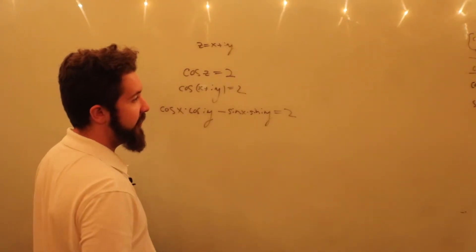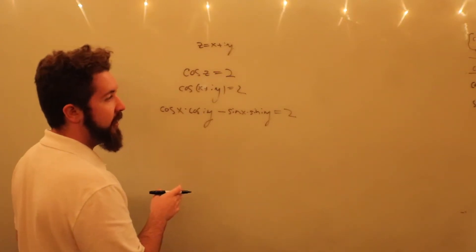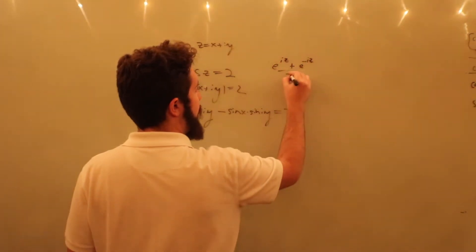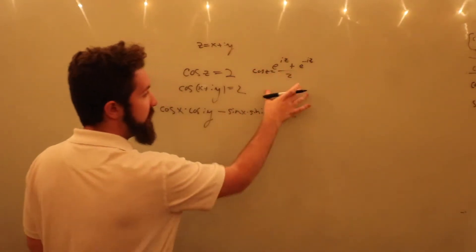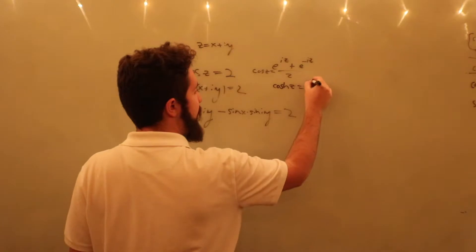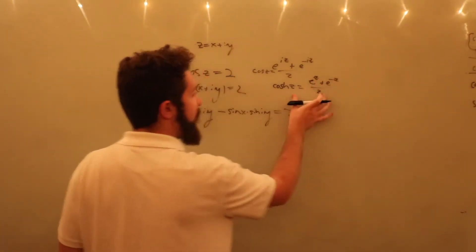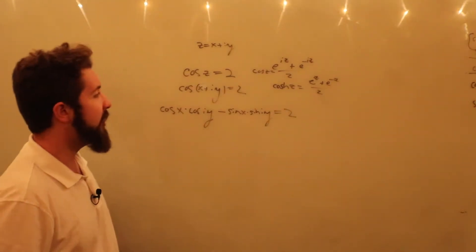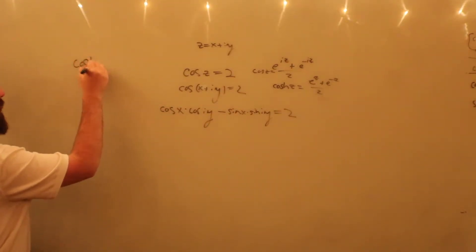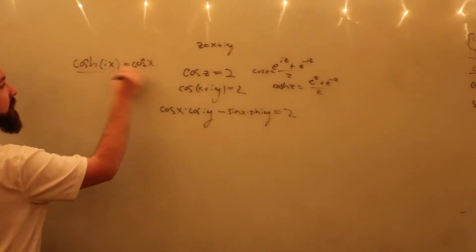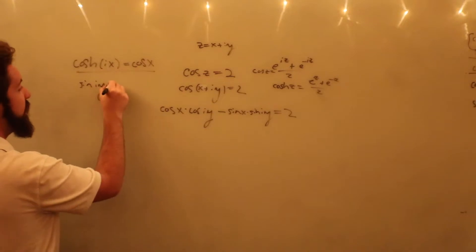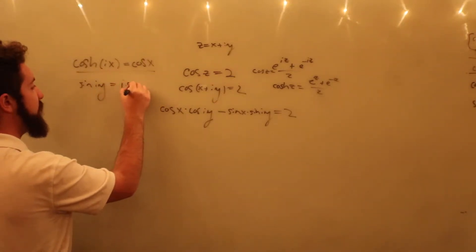Now we're going to use some more lovely identities. Because of the definition of sine and cosine in terms of these exponentials, e to the iz plus e to the negative iz divided by 2 is cosine. Notice the similarity between this and the hyperbolic cosine: cosh(z) is equal to e to the z plus e to the negative z over 2 — that's how we define it, even for real numbers. This gives way to the identity: cosh(ix) = cosine(x). Likewise, the second identity says sine(iy) = i·sinh(y).